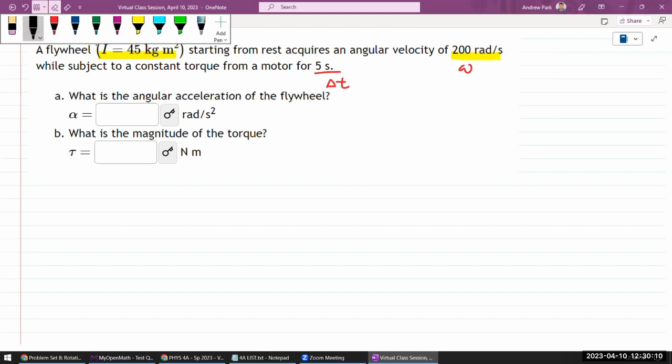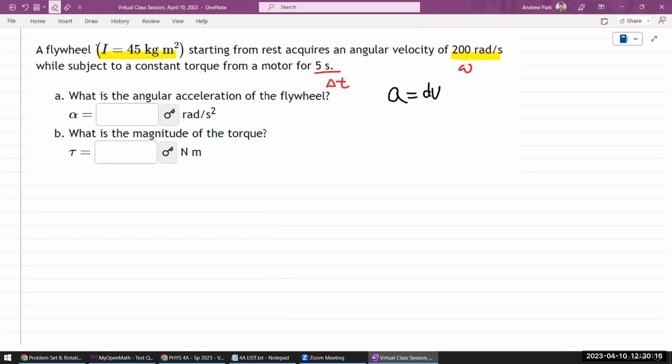So you know from translational kinematics that acceleration is defined as the time derivative of the velocity. Or if you're given a quantity like this and you're looking for average acceleration, then average acceleration would be change of velocity per some change of duration.